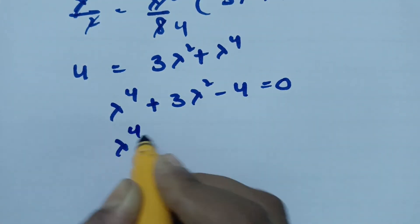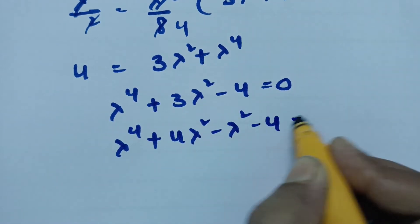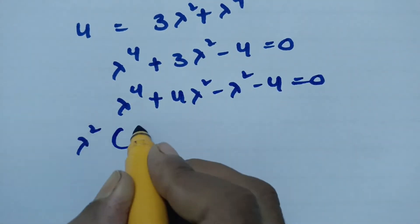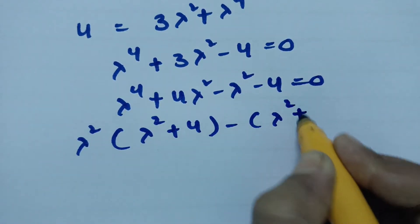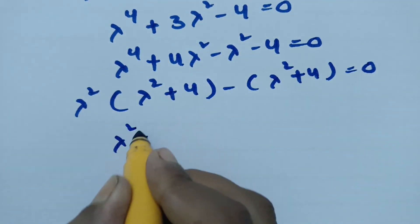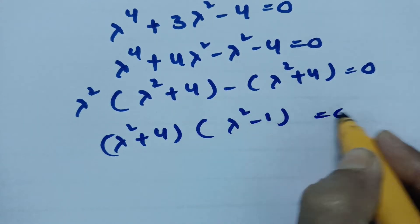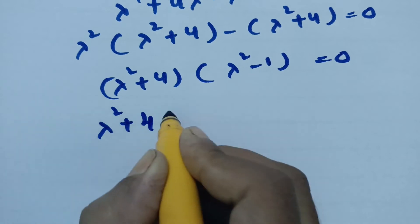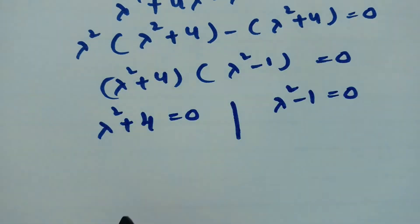Factoring the equation: lambda to the 4 plus 4 lambda squared minus lambda squared minus 4 equals 0. Taking lambda squared common gives lambda squared times (lambda squared plus 4), minus 1 times (lambda squared plus 4) equals 0. So (lambda squared plus 4)(lambda squared minus 1) equals 0.